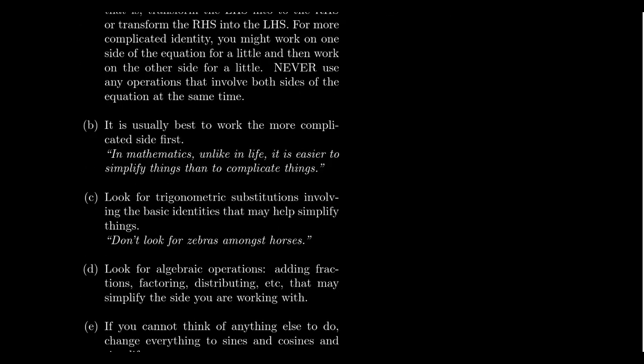The second guideline is that it's usually best to work with the more complicated side first. When we have the two sides of a trigonometric identity, I often choose the more complicated side to start with, even if it's the right-hand side. In mathematics, unlike life, it is easier to simplify things than to complicate them. It's easier to simplify than to take a simpler expression and expand it into a more complicated one.